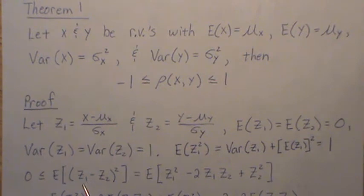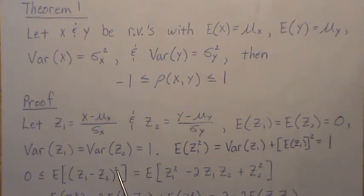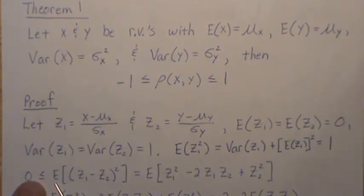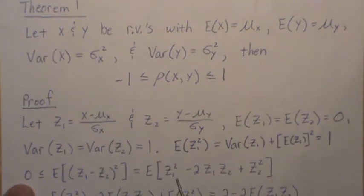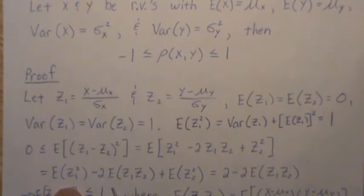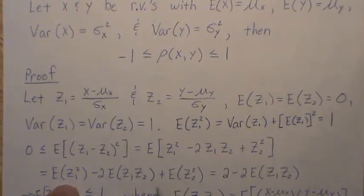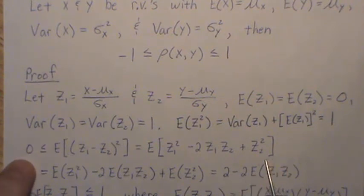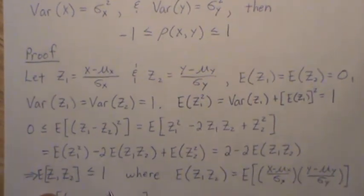Now, the random variable (z1 minus z2)² is always positive, so its mean has to be non-negative: the expected value of this is greater than or equal to 0. If we expand this quadratic and then distribute the expected value we get this expression. The expected value of z1 squared is 1 and likewise for z2, so that's 2 minus this term, all greater than or equal to 0. Dividing everything by 2 and rearranging gives us this relationship.